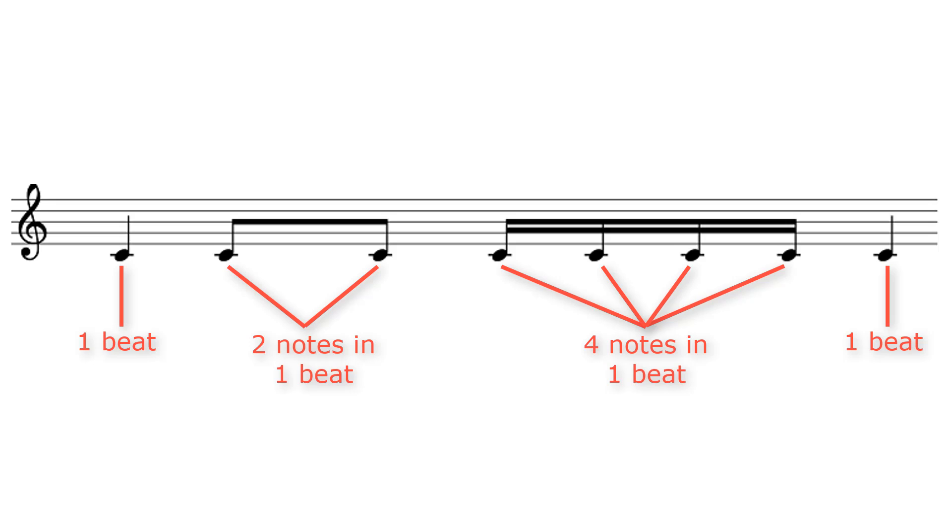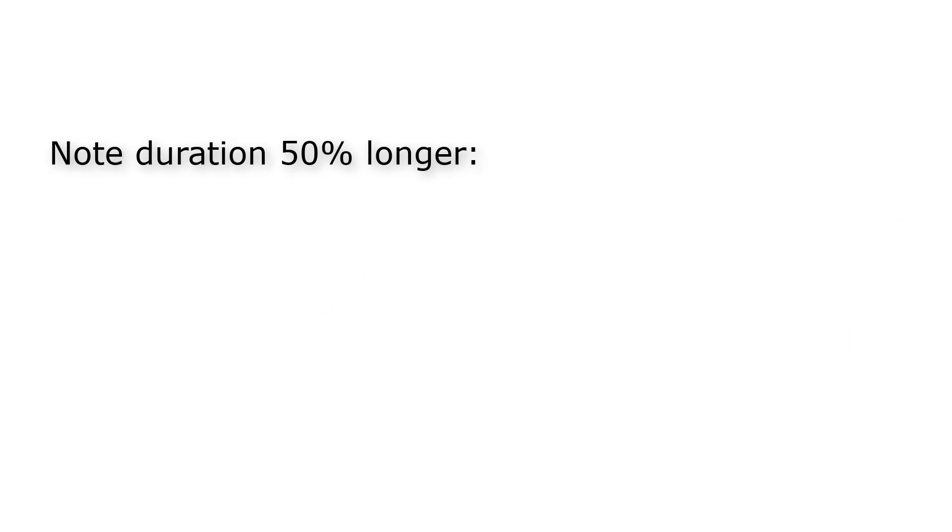It's possible to let a note sound 50% longer by putting a dot behind the note. Look at the next example. This is a quarter note with a dot. This means that the total duration is that of a quarter note plus 50% longer. So that's one beat plus a half beat, which is one and a half beats.